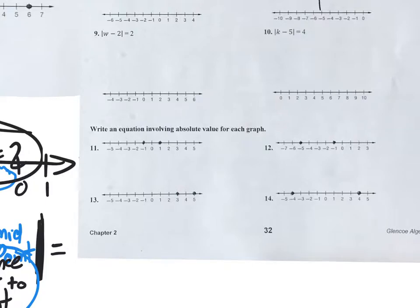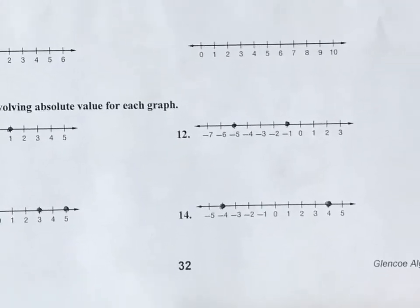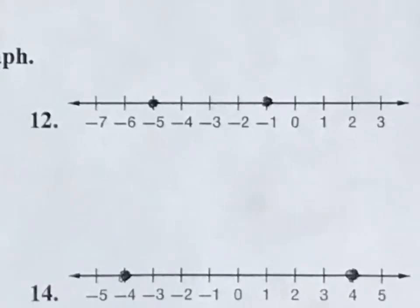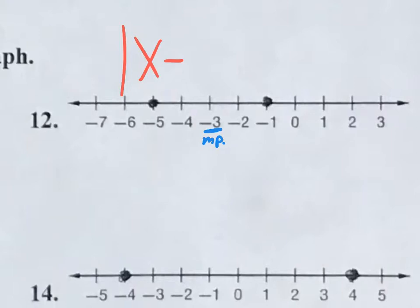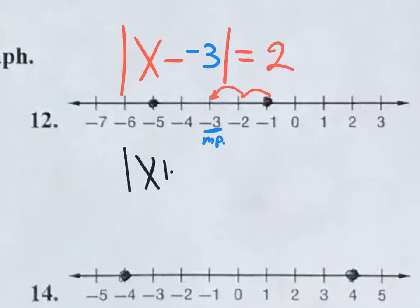We're going to use these notes on the homework. We have two answers: negative five and negative one. What would the midpoint of these two points be? Negative three. So the setup is: absolute value of x minus negative three equals the distance from the point to the midpoint, which is two. To write it nicer, it would be the absolute value of x plus three equals two, because minus negative three becomes plus three.